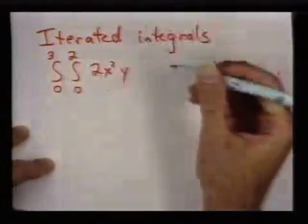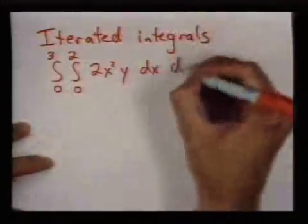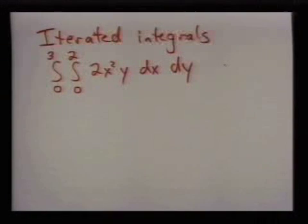So by iterated integral, I mean something like this. The idea is that you're performing two integrals in a row, essentially. Perhaps a better way to write it is with these brackets.